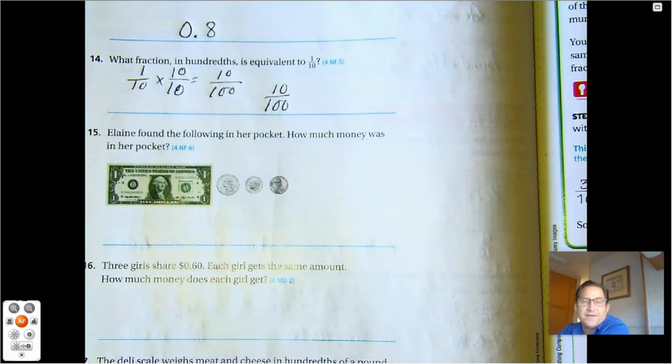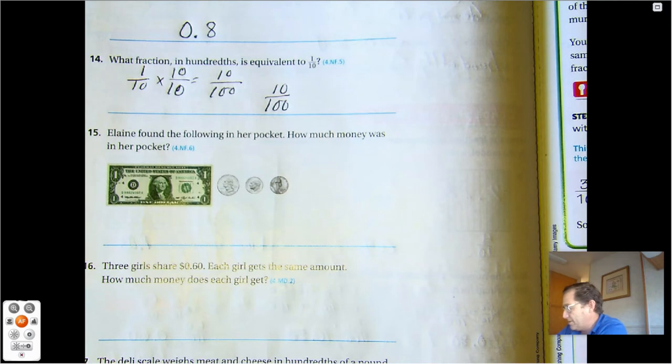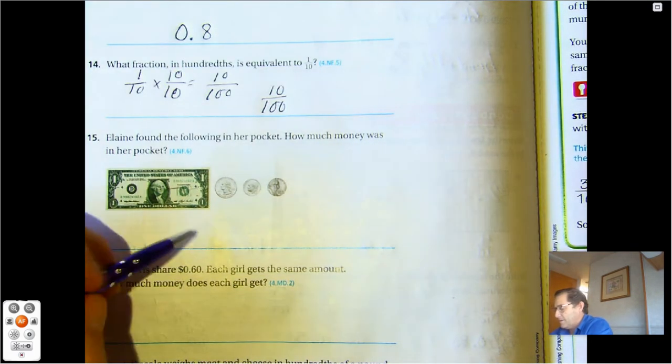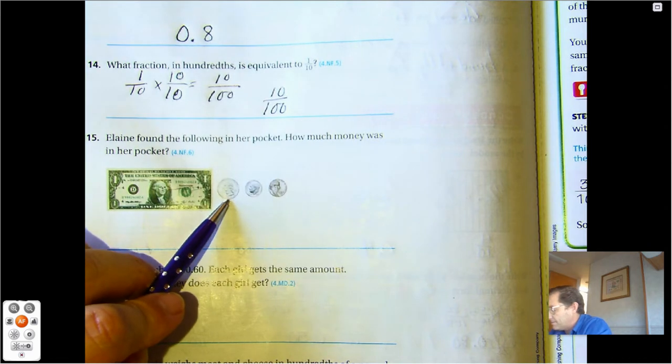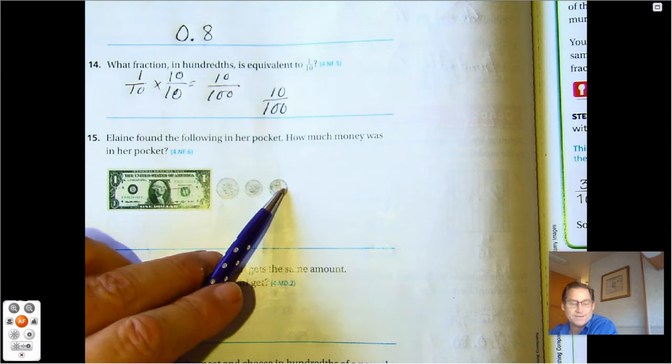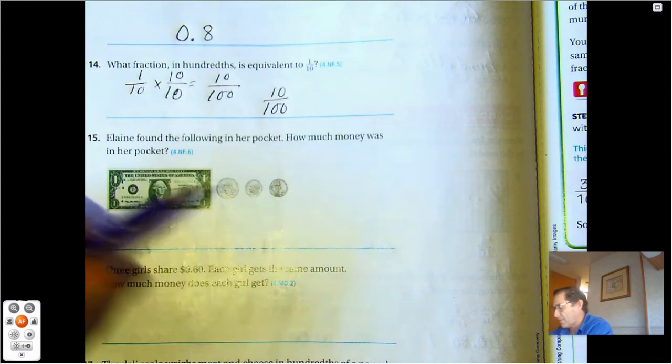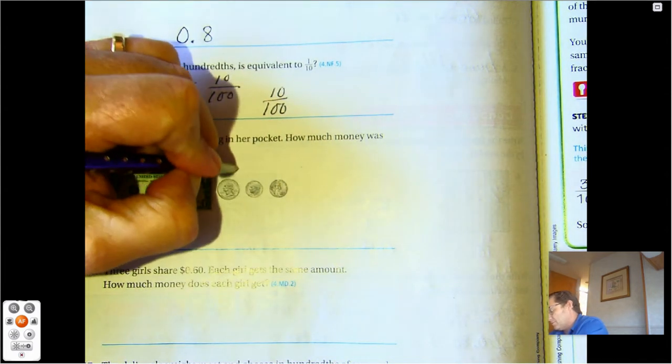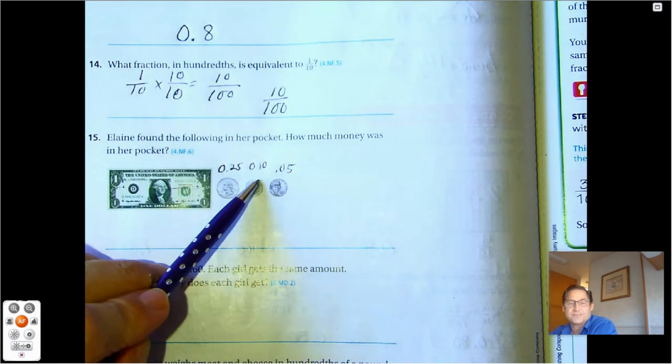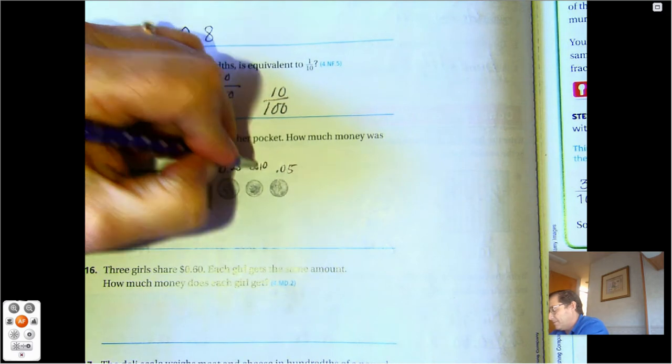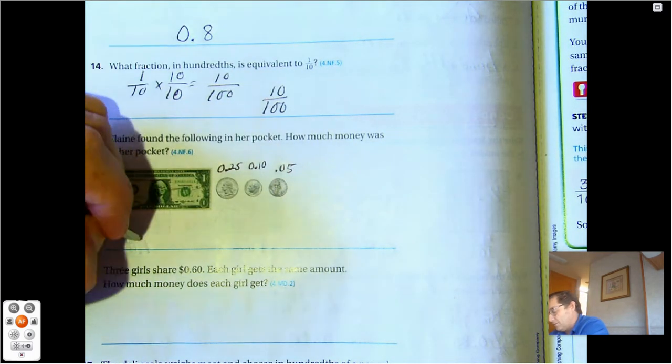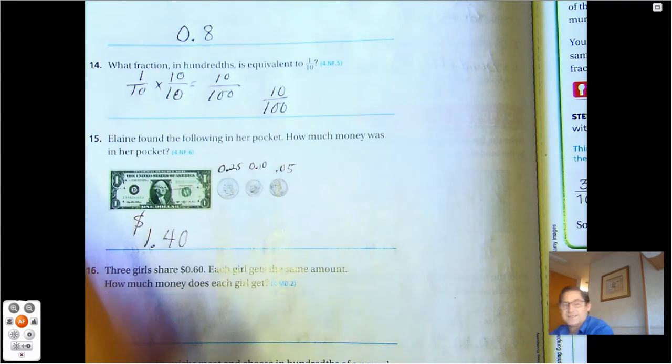Fifteen. Elaine found the following in her pocket. How much money was in her pocket? Okay, well we have a dollar here. Twenty-five, thirty-five, forty. We can write our amounts. Twenty-five plus ten is thirty-five. Thirty-five plus five is forty. Plus the dollar, so one dollar forty cents.